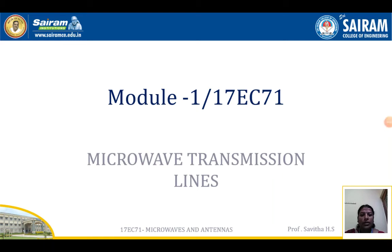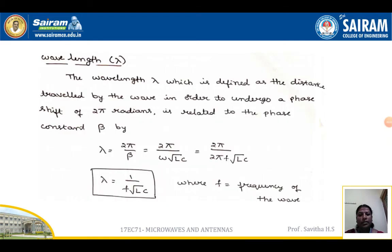Let's continue the derivation part for microwave transmission lines. The wavelength, denoted by lambda, is defined as the distance traveled by the wave in order to undergo a phase shift of 2π radians, and is related to the phase constant beta. So wavelength can be written as 2π divided by beta.